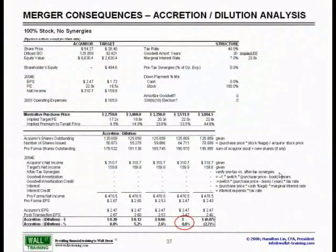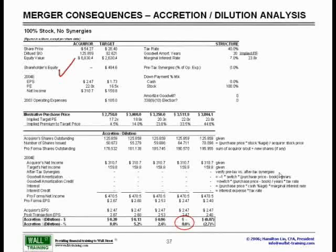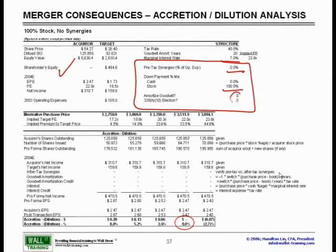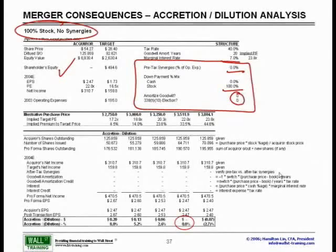This next slide is the exact same thing as the previous slide, except for a few changes. The inputs have stayed the same, but we've changed the deal structure. The deal structure is now 0% synergies, 100% stock, no goodwill amortization, no 338(h)(10). We are trying to capture truly clean numbers — 100% stock, no synergies.